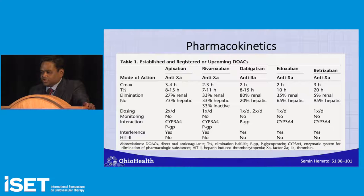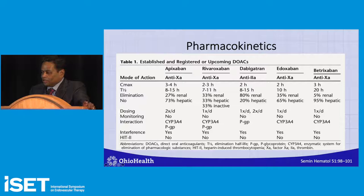We must be very cautious with dabigatran in patients with renal insufficiency. Most are once-daily dose except apixaban, which is twice a day. No monitoring is needed. Cytochrome 3A4 interactions are seen with most of these drugs, and there are no reports of type 2 heparin-induced thrombocytopenia with any of them.